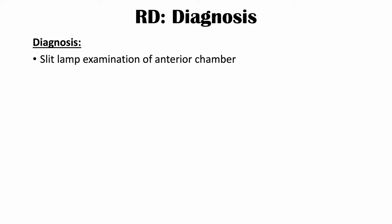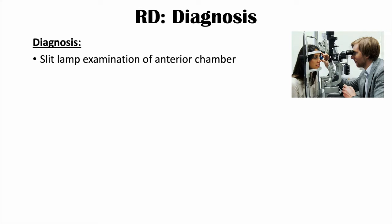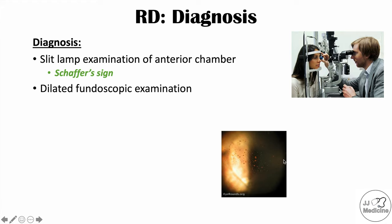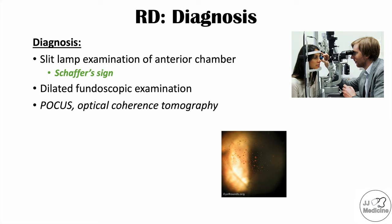Retinal detachment is diagnosed using a slit lamp examination of the anterior chamber. A key finding is Schaffer's sign — clumping of pigmented cells that can be seen in the anterior chamber. A dilated fundoscopic examination is also important, as are point-of-care ultrasound (POCUS) and optical coherence tomography. Decreased intraocular pressure in the affected eye compared to the normal eye is another diagnostic finding.